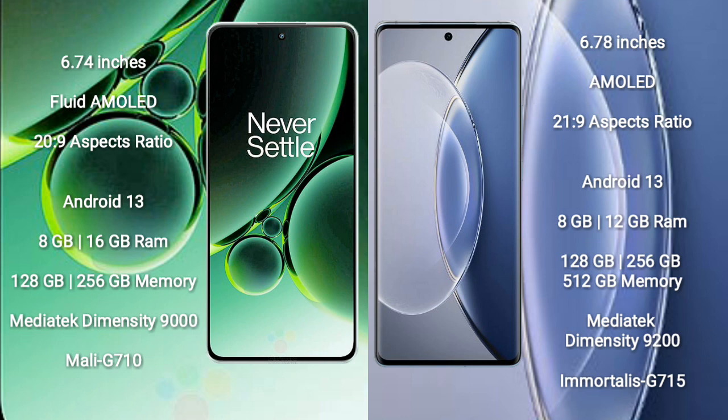OnePlus Nord 3 comes with 8GB or 16GB RAM and 128GB or 256GB internal storage. It is powered by the MediaTek Dimensity 9000 processor with GPU Mali-G710.